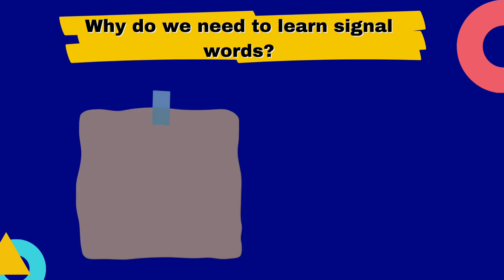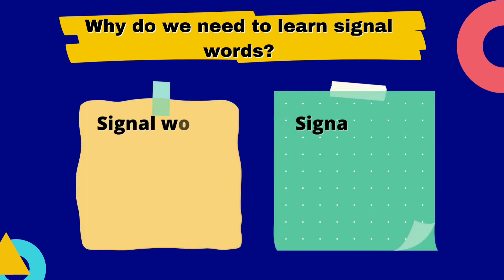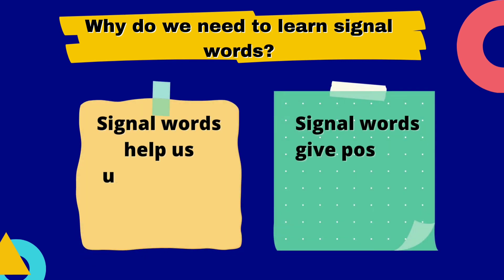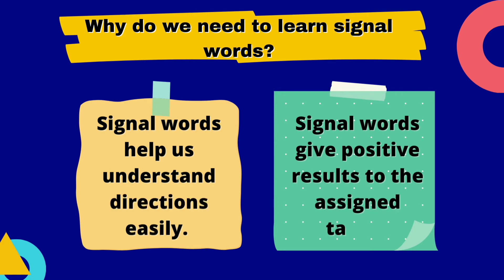Why do we need to learn signal words? Because signal words help us understand directions easily. They also give positive results to the assigned task because they make instructions easy to understand.